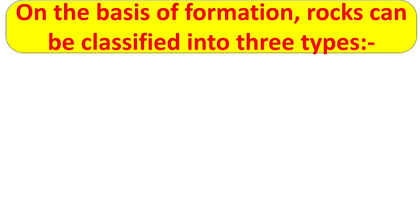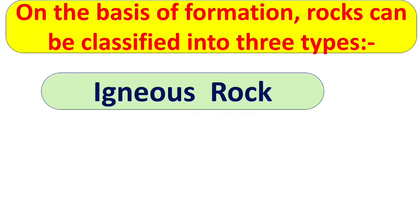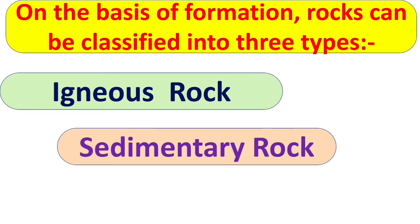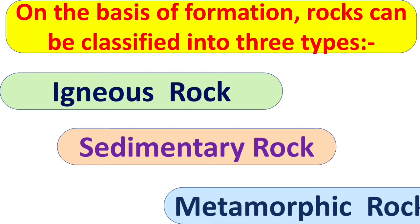On the basis of formation, rocks can be classified into three types: igneous rocks, sedimentary rock, and metamorphic rock.